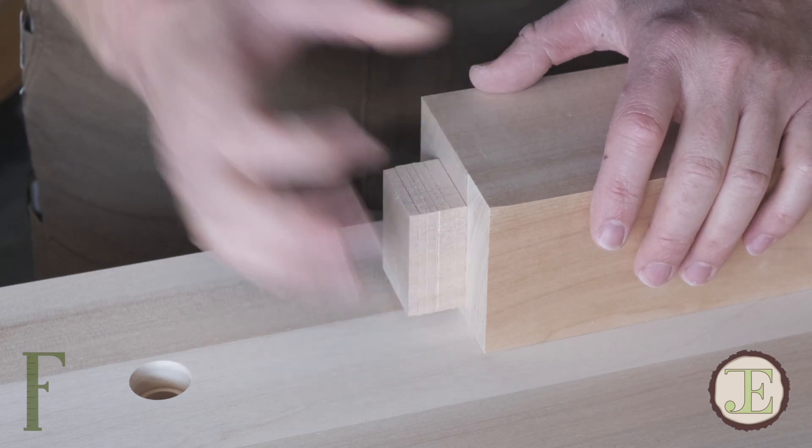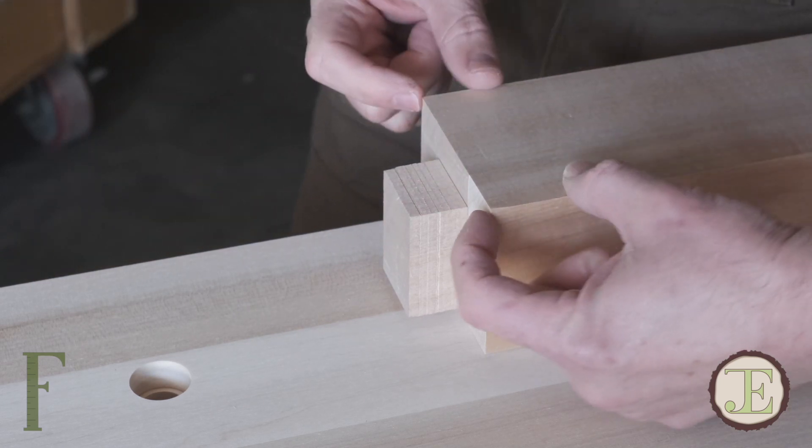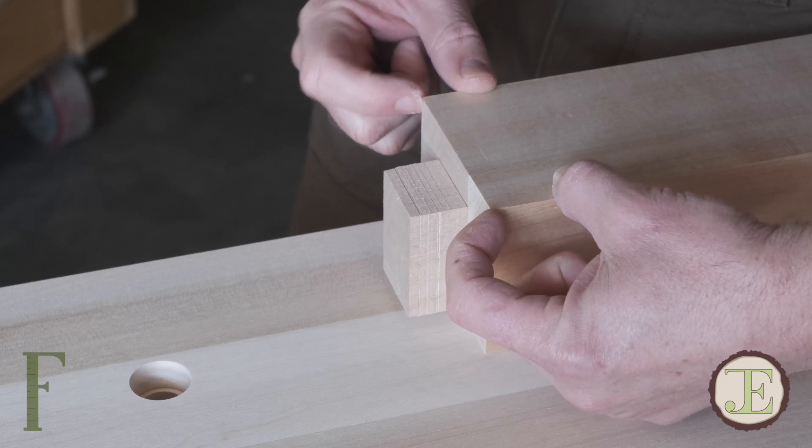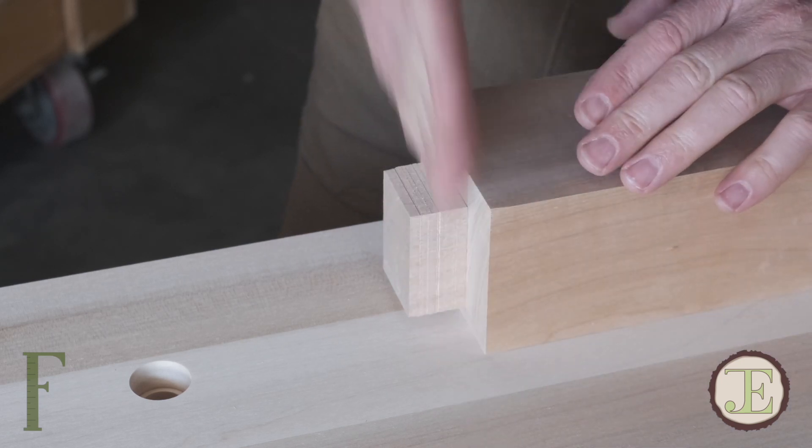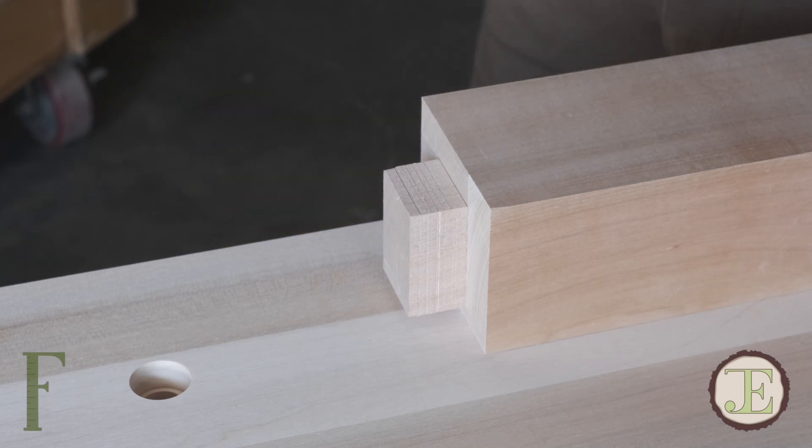You can hear it. So that means that these two edges, these two corners are square with one another, but the blade cut at an angle and it left a ramp and I can check that with a square.